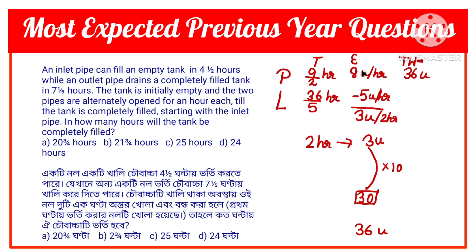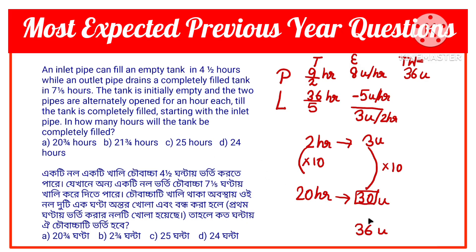Multiplying 3 by 10 gives 30 units of work. On the time side, 2 hours × 10 = 20 hours. So in 20 hours, 30 units of work are completed. But 36 − 30 = 6 units of work are still remaining.